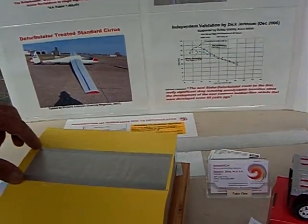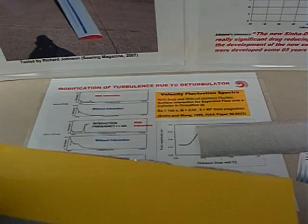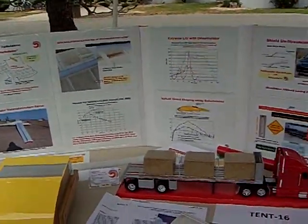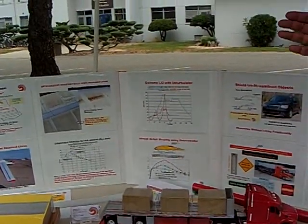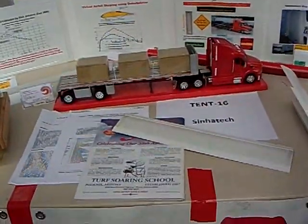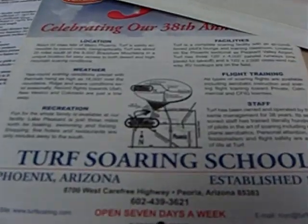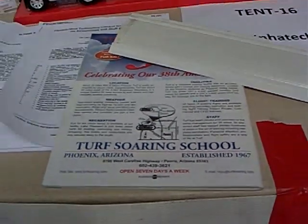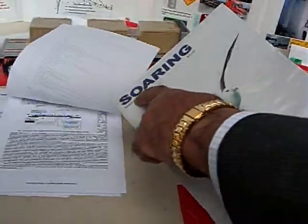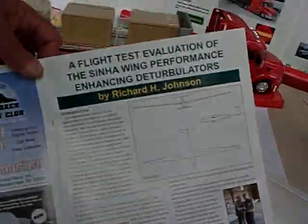You put a strip of the flexible skin material on the top surface. We found the location using both mathematical modeling and experiment — the model only approximates exact conditions, so you always have to fine-tune it. This was tested and published in Soaring Magazine in May 2007, done by Dick Johnson in one of his last tests.